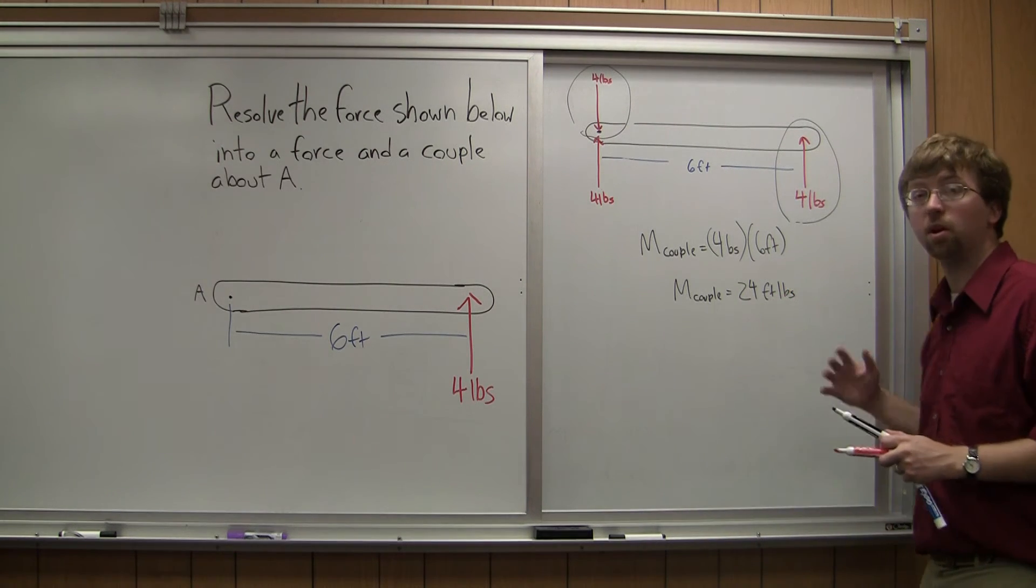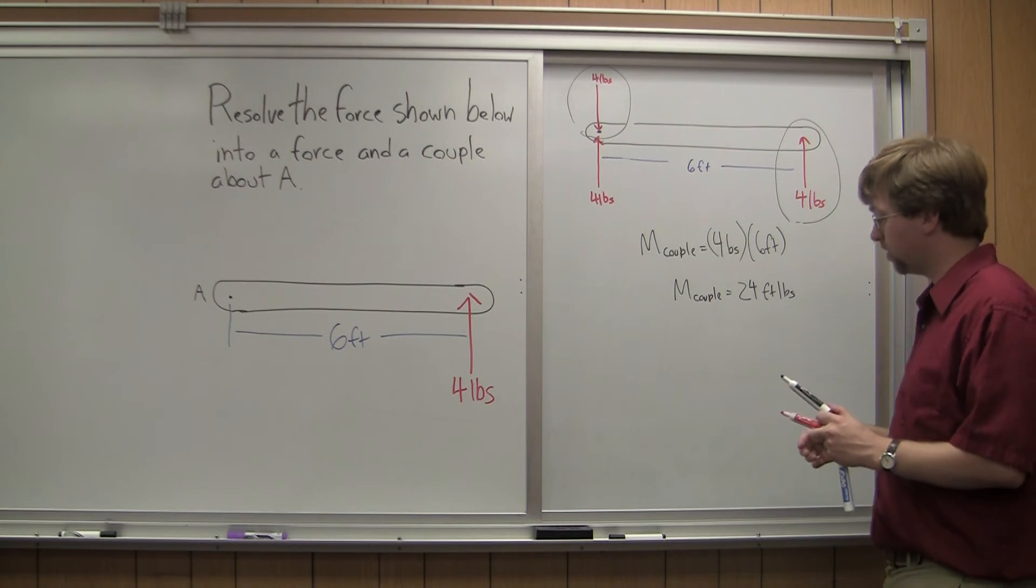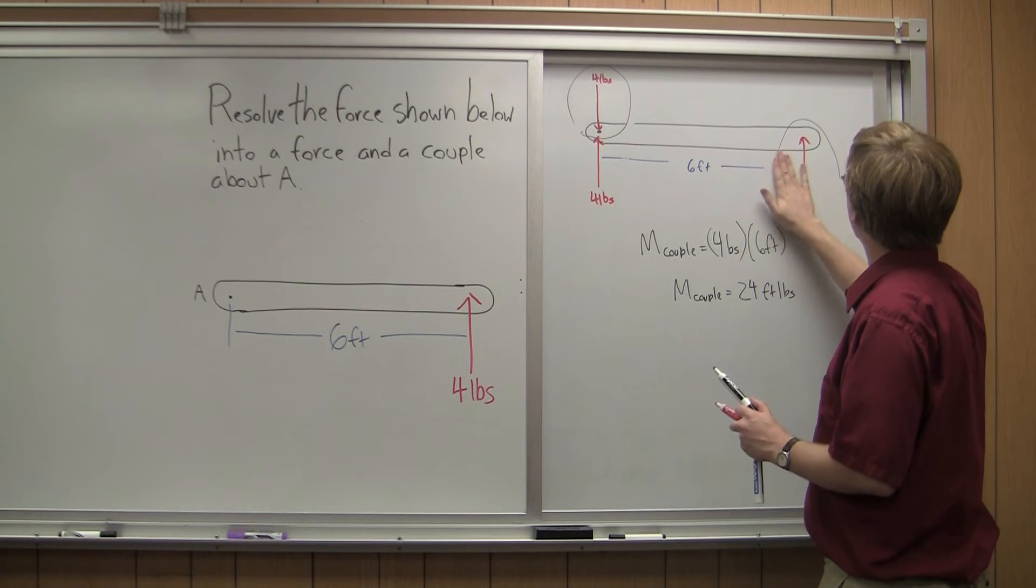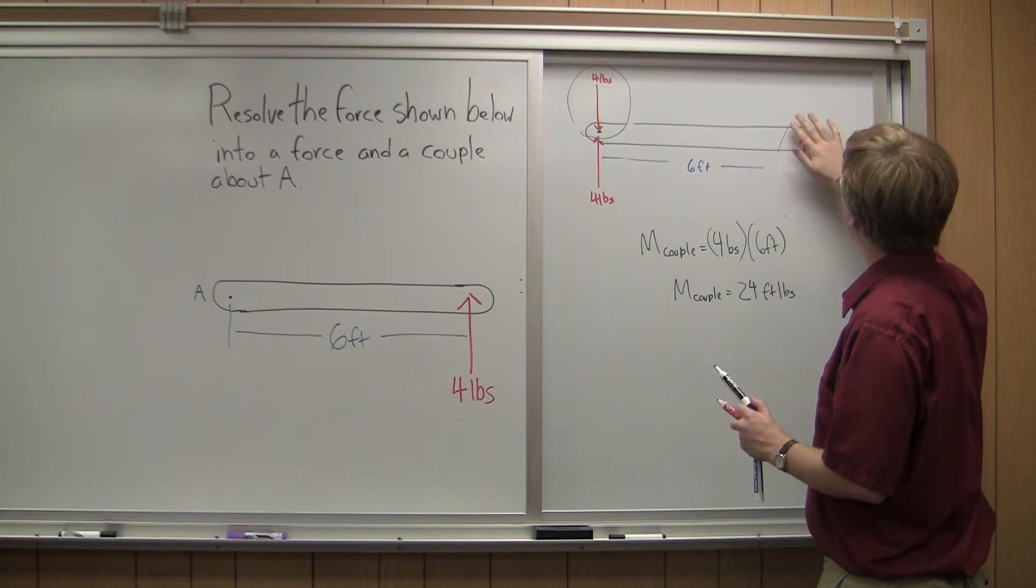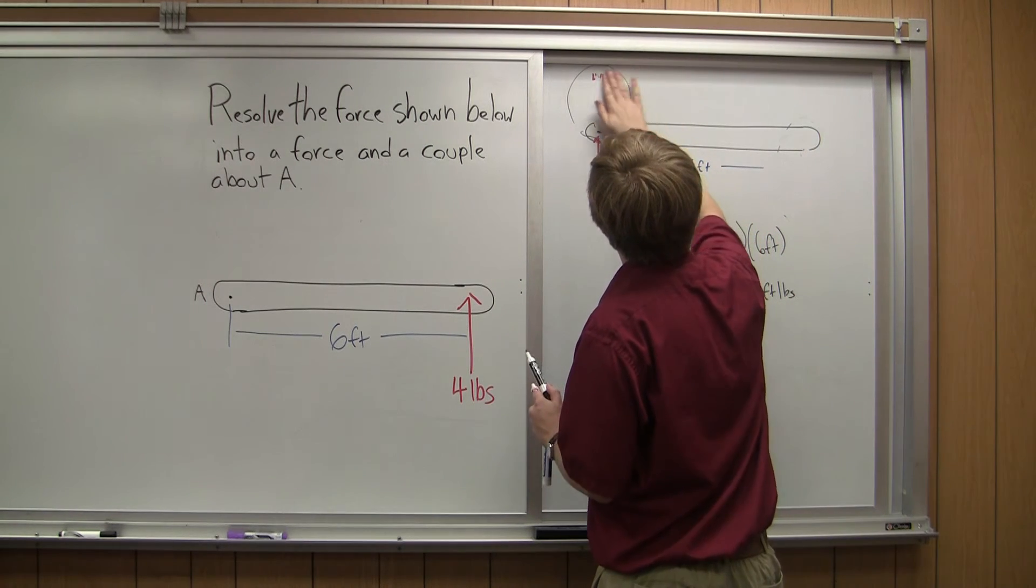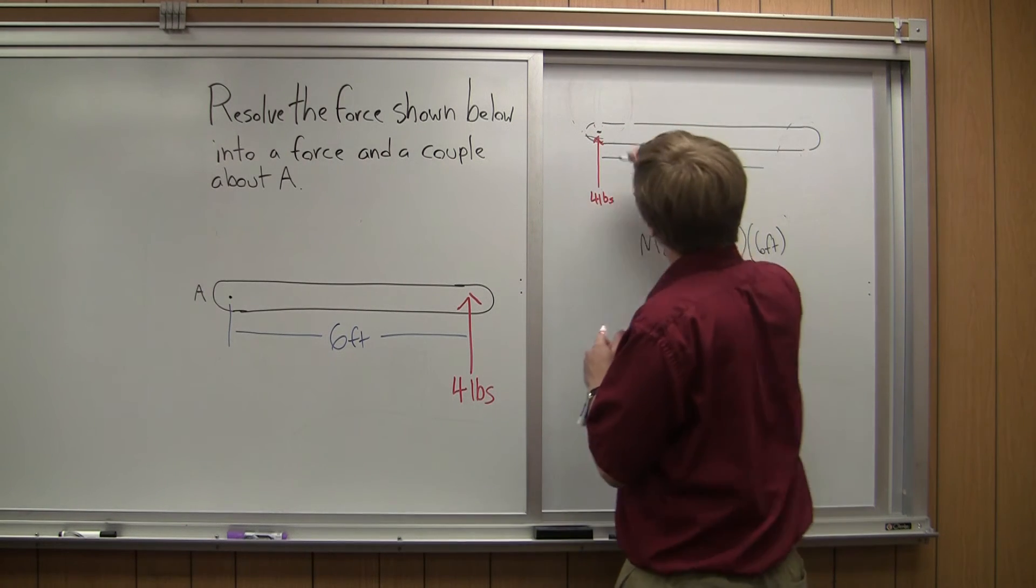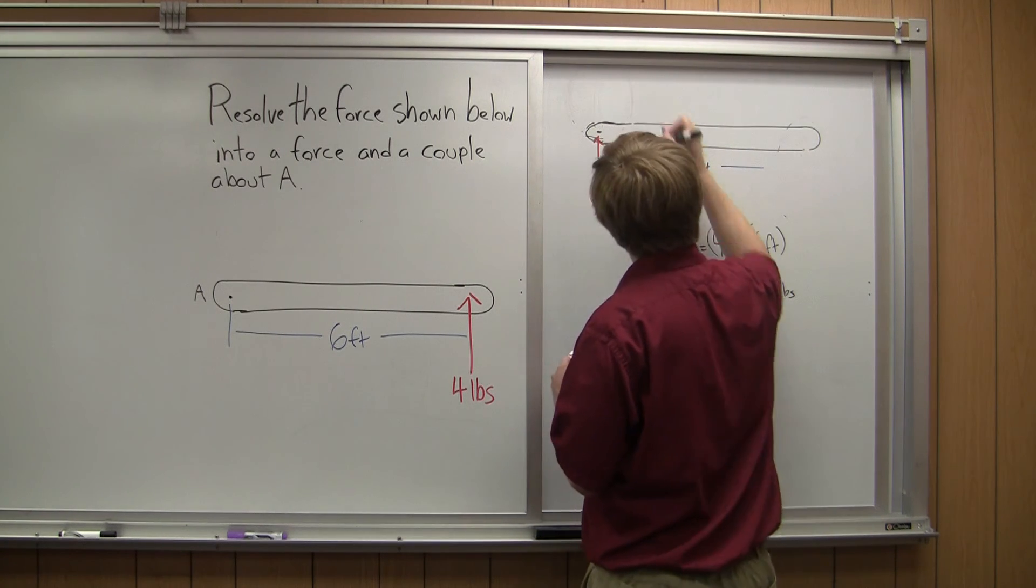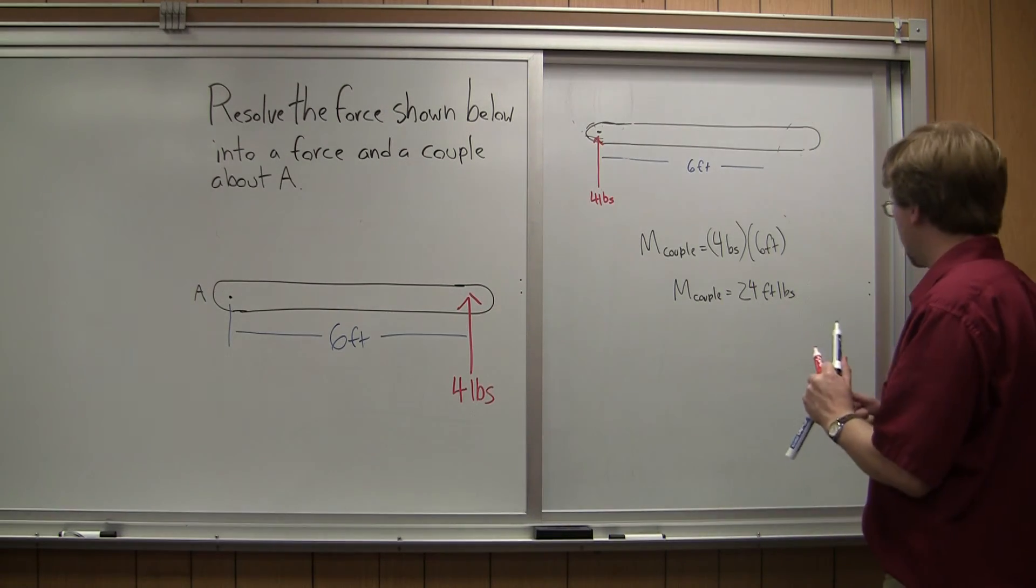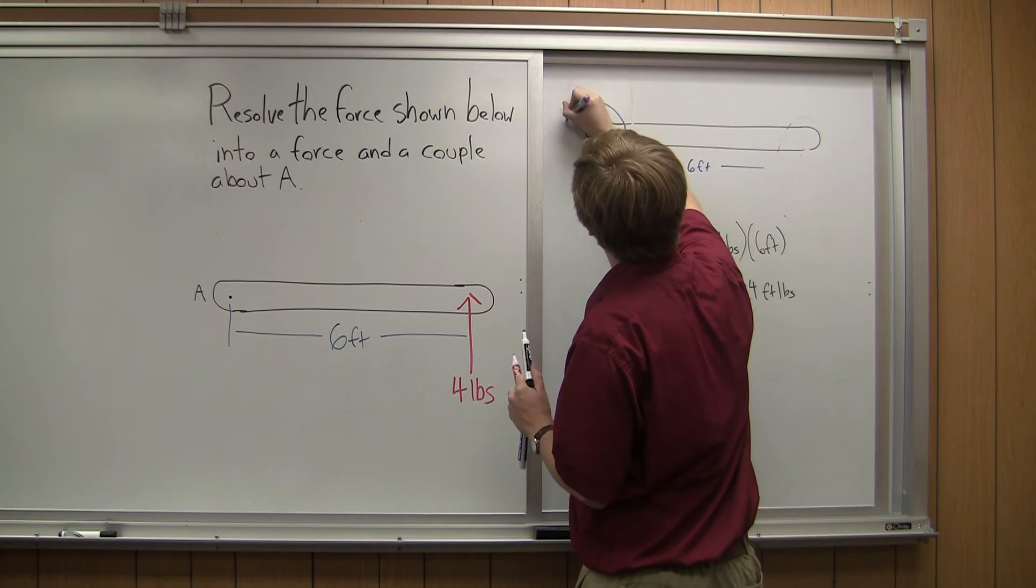Alright, so with that, I'm going to replace the forces on here. Since there's no net force, I'm going to redraw this as just a straight-up moment. So I take that out, I take that out, and I replace it with a couple. So the moment of that couple is 24 foot-pounds. I know it's positive, so it's going in this direction.